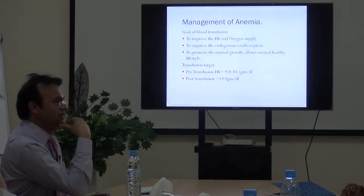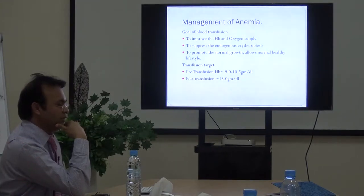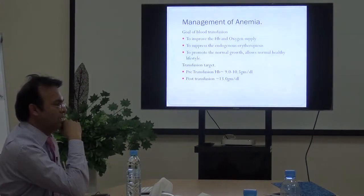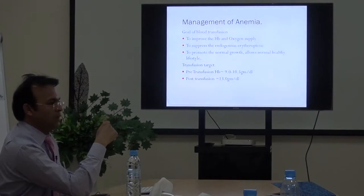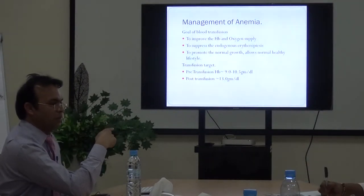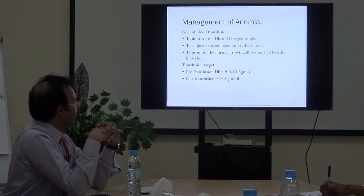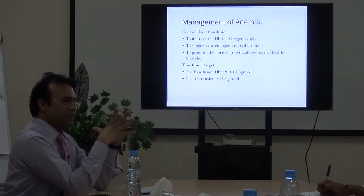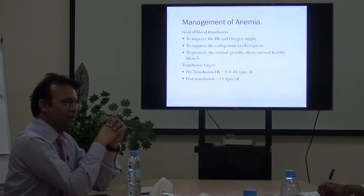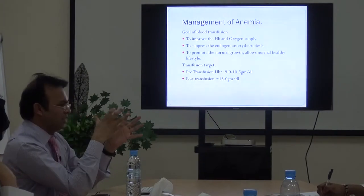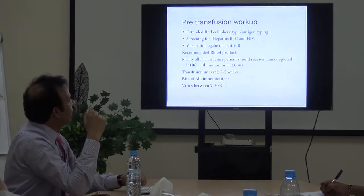Anemia should be managed in thalassemia by blood transfusion. The goal of transfusion is not only to improve hemoglobin and oxygen supply but also to decrease the patient's own endogenous erythropoiesis, because ineffective erythropoiesis leads to multiple complications including splenomegaly and skeletal deformities. Our transfusion target in thalassemia major patients is a pre-transfusion hemoglobin of around nine to ten grams and post-transfusion not exceeding fourteen grams, around thirteen grams. This is called hypertransfusion or supertransfusion.